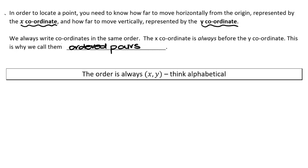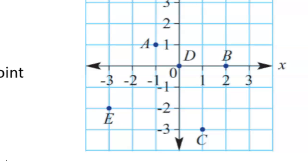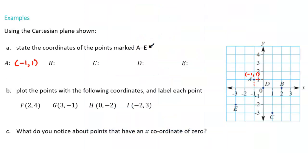As a reminder, we always do the x-coordinate before the y-coordinate — I like to remember it's always alphabetical. On this Cartesian plane we have the x-axis, y-axis, and the origin in the middle, and it asks us to state the coordinates for points labeled A to E. When writing coordinates, always put brackets around them — otherwise we're not really sure what you're trying to communicate.